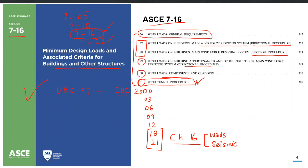There is also a separate ASCE document for wind tunnel testing with additional guidelines available. Chapter 31 is a very brief chapter prescribing only the minimum requirements and considerations to keep in mind while performing a wind tunnel test. For details, you should refer to other ASCE guidelines specified specifically for wind tunnel testing.